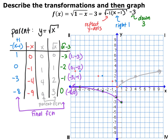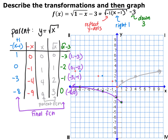Whether you did it graphically or with the table, you end up with the same result. The middle in gray is my parent function; the furthest outside is my final function. So (0, 0) is now at (1, −3). The point (1, 1) is now at (0, −2). The point (4, 2) is now at (−3, −1), and (9, 3) is now at (−8, 0).